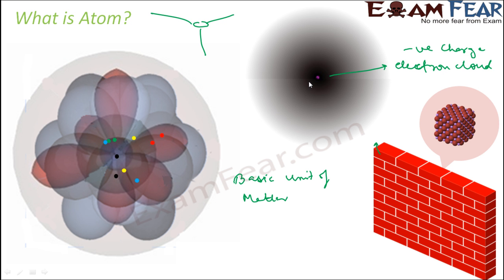So Atom is the basic unit of matter. You take any matter, you take apple, you break apple into small, small part. The smallest part which you get will be Atom. And that is not visible through naked eyes. You can't see that.